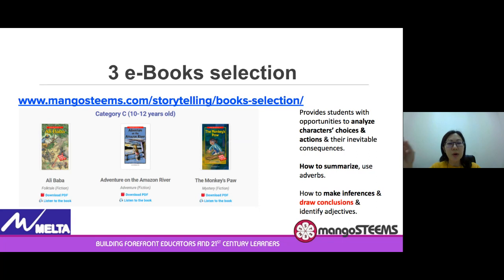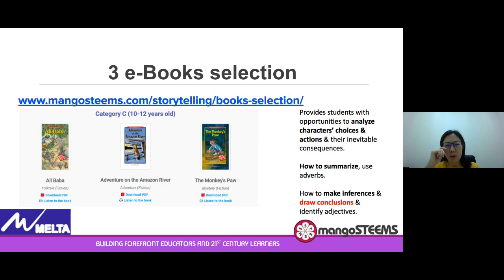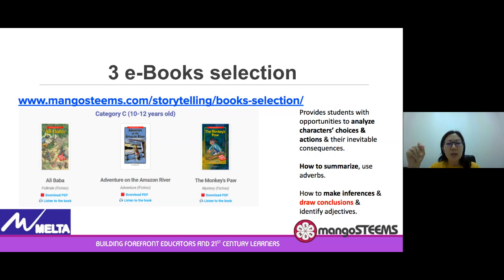For upper primary children in Category C, there is always an opportunity to analyze character choices. I have picked three very popular books: Alibaba and the 40 Thieves — I think all school children in Malaysia would know this one — An Adventure on the Amazon River, and a mystery fiction called The Monkey's Paw. Children are highly encouraged to tell it in their own words to capture the essence.